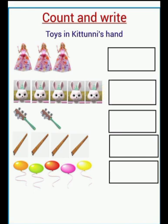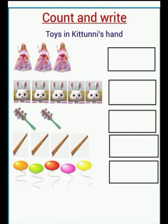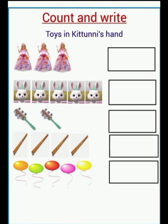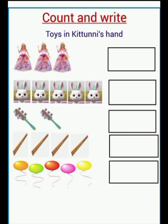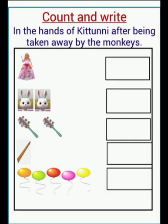Next we see kilook. How many? One, two. Then we see barrels. Let's count: one, two, three, four. We see four barrels. Then we see balloons. Let's count: one, two, three, four, five.